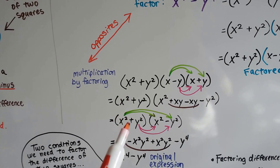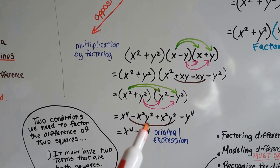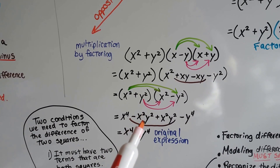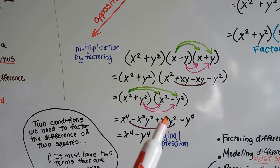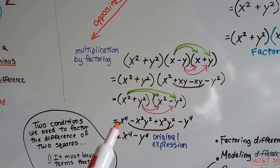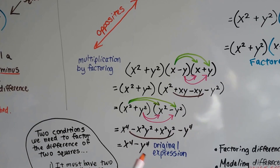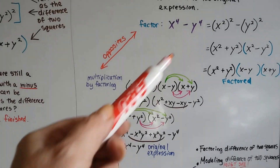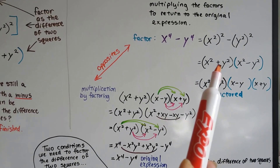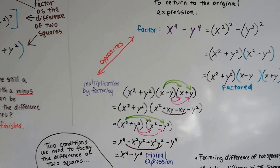Then we drop this down and FOIL again, and the negative x squared y squared and positive x squared y squared cancel as zero pairs, giving us x to the 4th minus y to the 4th — the original expression we started with. So factoring is the opposite of multiplication.